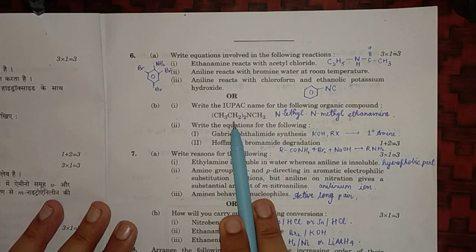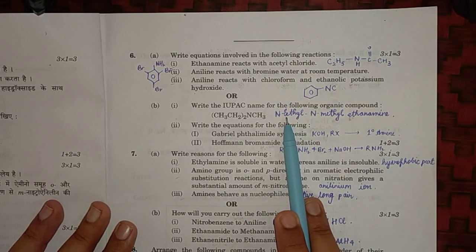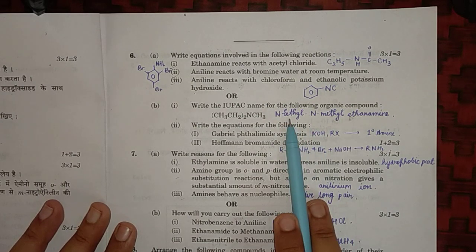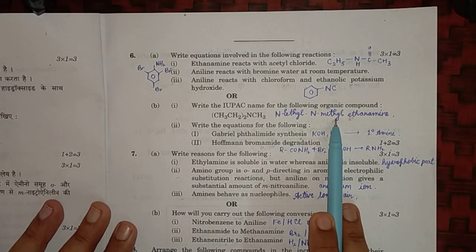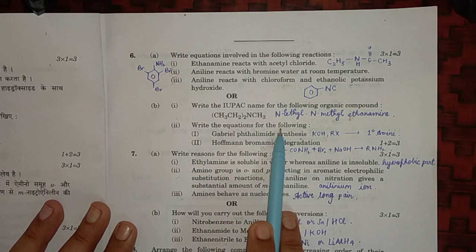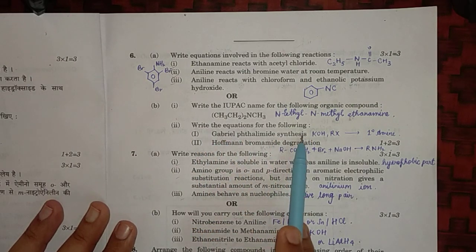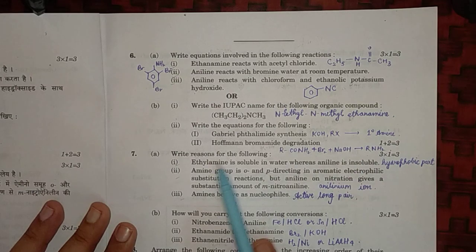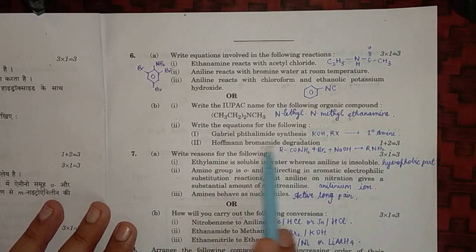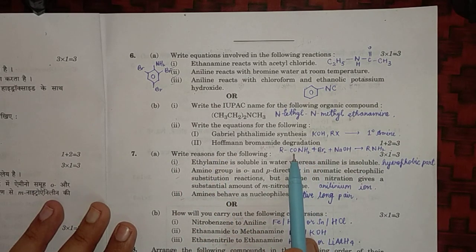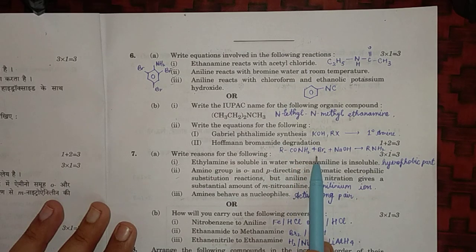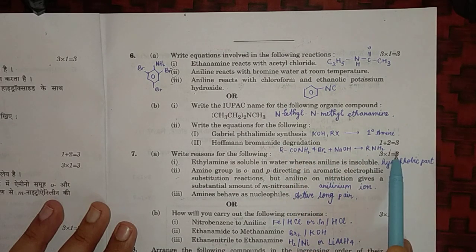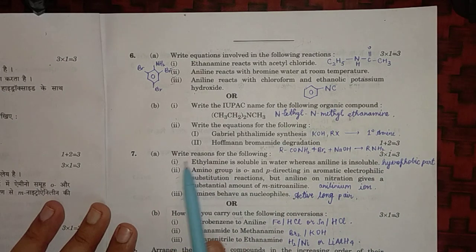IUPAC name of this will be N-ethyl-N-methyl - this will be first because E is alphabetically ahead of M - so N-ethyl-N-methyl ethane amine. Write the equation for the following: Gabriel phthalimide synthesis - you can do it with KOH and RX, it forms one degree amine. And Hoffmann bromamide degradation is used in RCONH2 with Br2 and NaOH to give RNH2 one degree amine.